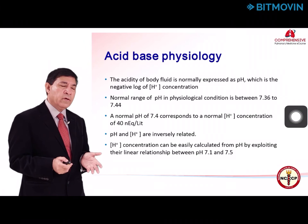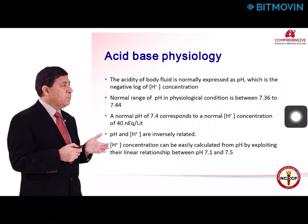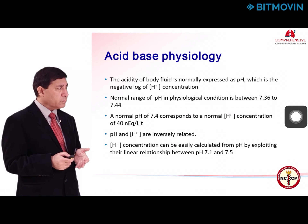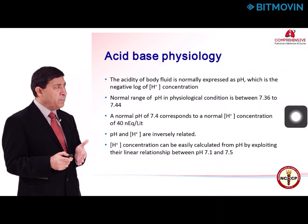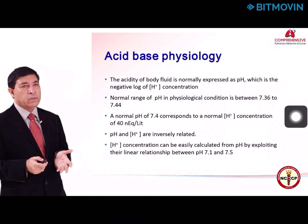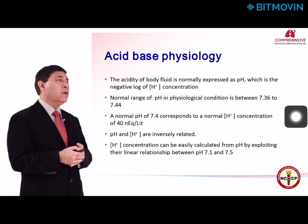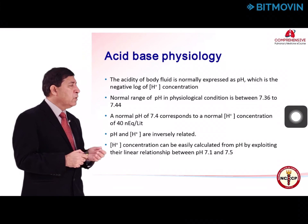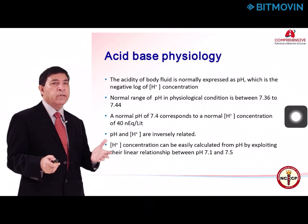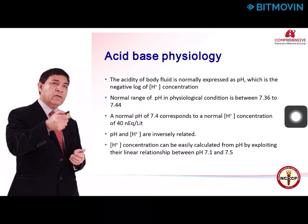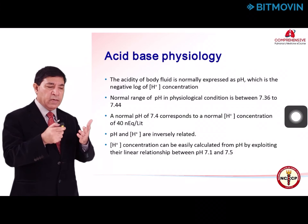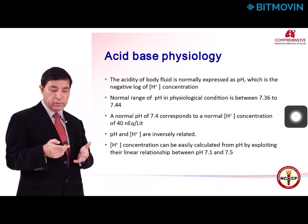The normal range of pH is between 7.36 and 7.44. A normal pH of 7.4 corresponds to a normal hydrogen ion concentration of 40 nanoequivalents. pH and hydrogen ion are inversely related — as the pH rises, the hydrogen ion concentration falls, and as the pH falls, the hydrogen ion concentration increases.